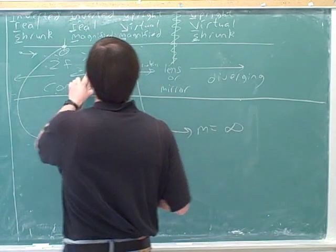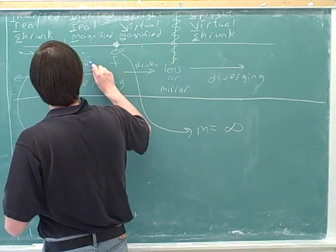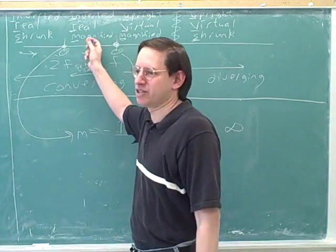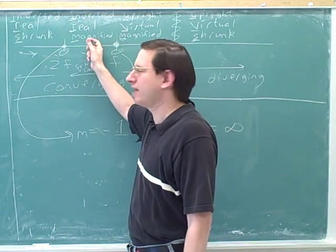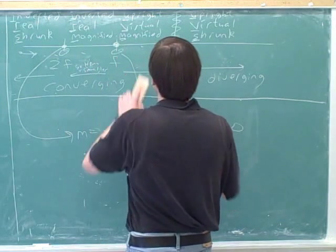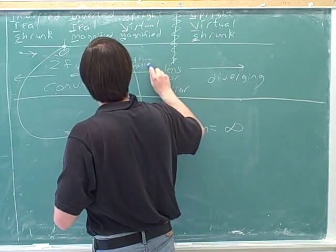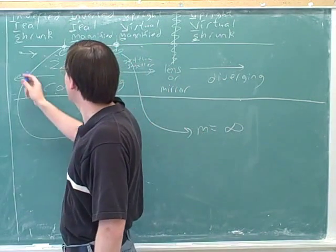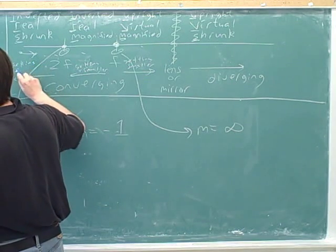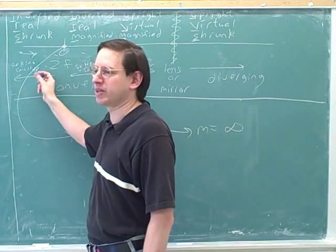Maybe I shouldn't say shrinking here — I should say getting smaller. Notice you can be getting smaller even in the magnified region. Here the image is still bigger than the object, but it's getting less and less bigger than the object. So what's happening here — getting smaller if you move to the left here. If you were moving to the right here, you'd be getting bigger.